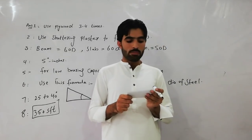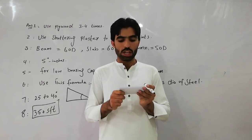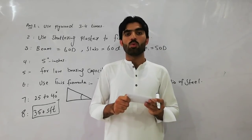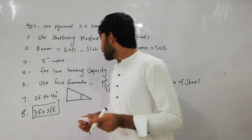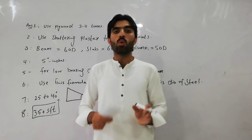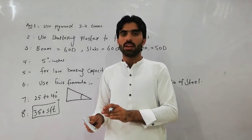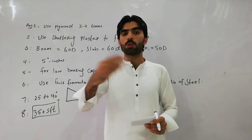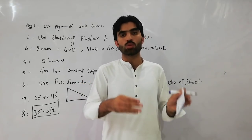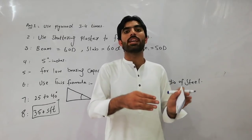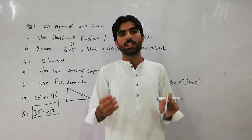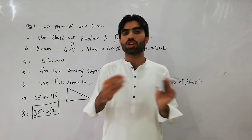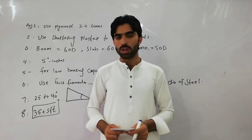Question number ten: why do we convert wet material to dry material, meaning why do we multiply by 1.54? When you convert wet concrete material to dry material, you multiply by 1.54 because dry material increases by 54 percent. We bring dry material from the market to use in construction, so this conversion factor is needed.